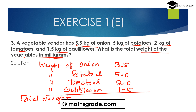The total weight of the vegetables: 5 plus 5 is 10, carry 1; 1 plus 3 is 4, 4 plus 5 is 9, 9 plus 2 is 11, 11 plus 1 is 12. So the total weight of the vegetables is 12.0 kg. We now need to convert this into milligrams.